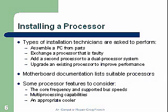Installing the processor. Types of installation: technicians are asked to perform assembly of a PC from parts, exchange a faulty processor or upgrade, add a second processor to a dual processing system, or upgrade an existing processor to improve performance. Motherboard documentation lists the suitability of processors, so you always need to check what CPUs a motherboard can handle. Some processor features to consider: core frequency is very important, as is bus speed — which is really an overriding factor even over core frequency. The faster the bus speed, the faster data gets in and out of the CPU. Multi-processing capability and an appropriate cooler are also important.